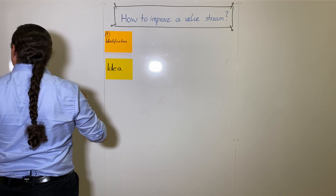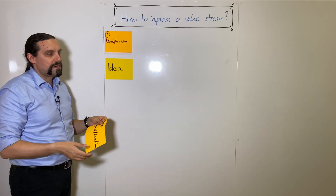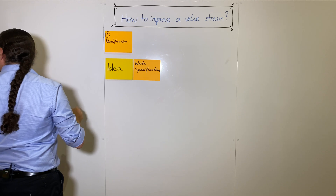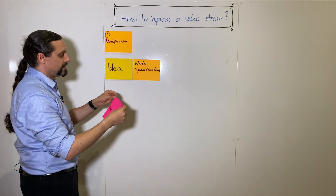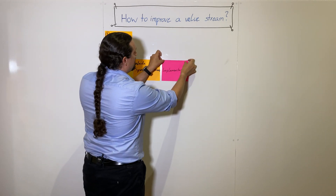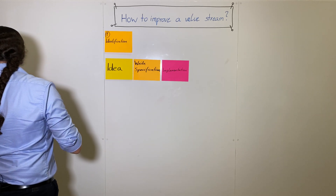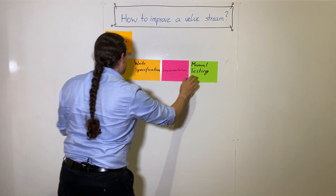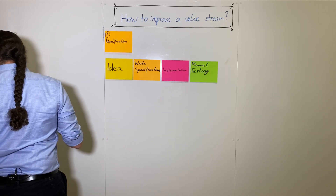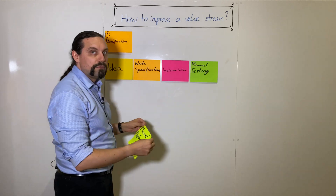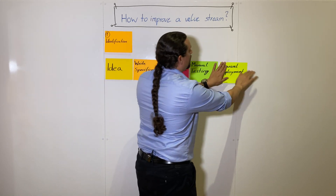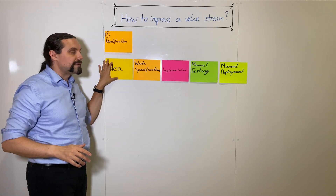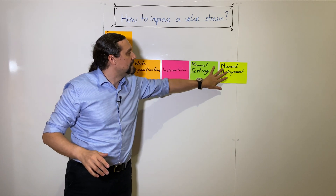First we have the idea — for example, of a feature. Then we are going to write the specification of this feature. Then we implement this feature. We are going to manually test that feature, and then we are going to manually deploy this feature. So what we can see here is a classical value stream.